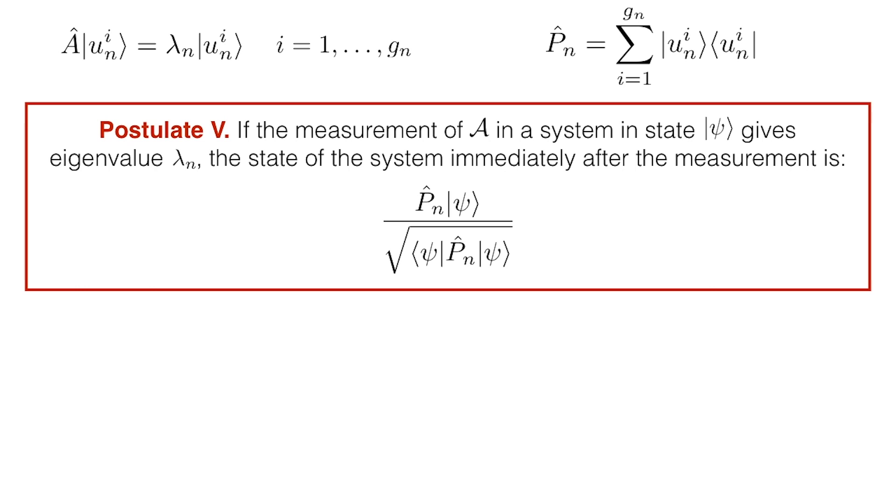When the eigenvalue lambda n is degenerate, then the P n operator projects onto the g n-dimensional subspace of the eigenvalue. The numerator is simply the projection of psi onto this subspace, and we call this state psi n. And this expectation value is simply the bracket of psi n with itself. This of course ensures that the state we end up with is properly normalized.